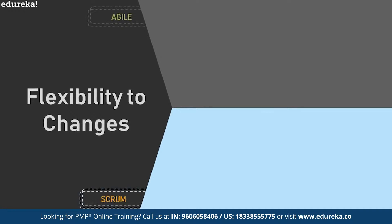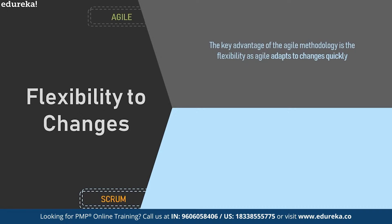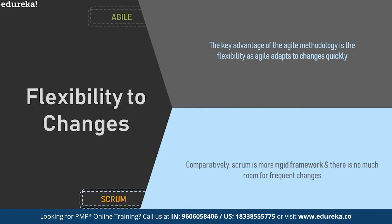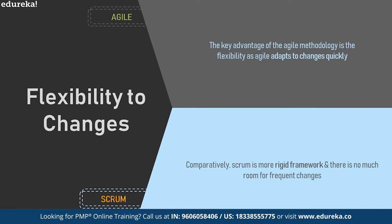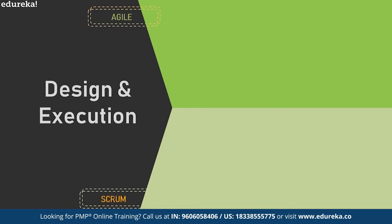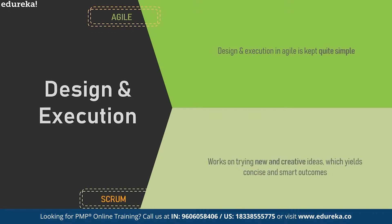How flexible are agile and scrum to changes? The key advantage of agile methodology is flexibility — agile adapts to changes very quickly and smoothly, and is supple to changing circumstances. Scrum, however, has a somewhat rigid and structured approach, and its stiffness to repeated changes can be a downside for some projects. So when it comes to flexibility, agile is the better choice. As for design and execution, due to multiple executions in agile, the design tends to be very simple and straightforward — nothing that wasn't done before. Scrum, on the other hand, works on trying new and creative things, leading to concise and smart outcomes.